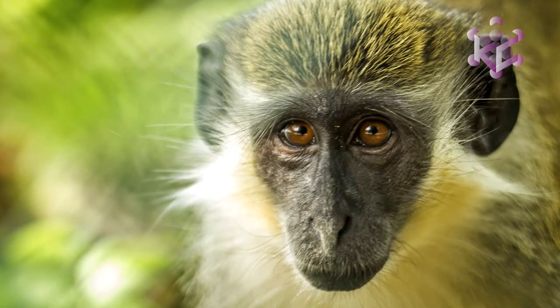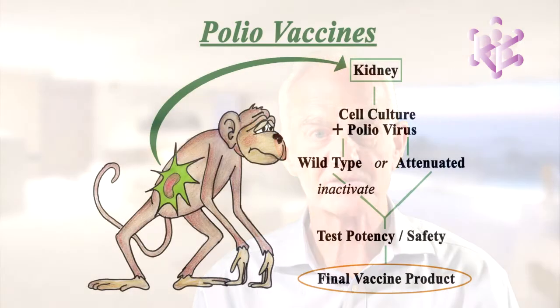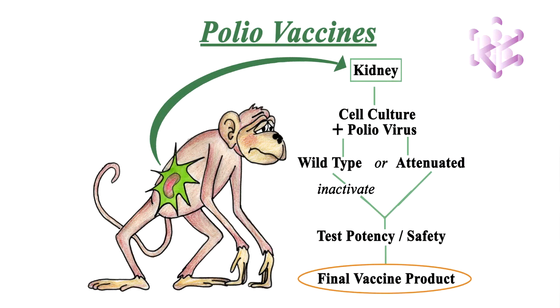The best-studied stealth-adapted virus was cultured from a patient with chronic fatigue syndrome. Molecular analysis showed that it was not derived from a human virus but rather from an African green monkey cytomegalovirus. A similar virus was isolated from a patient with a bipolar psychiatric illness. The unequivocal derivation of these viruses from monkeys is realistically explained as a result of using cytomegalovirus-infected monkeys to make polio vaccines.